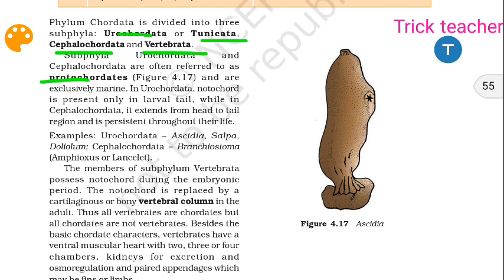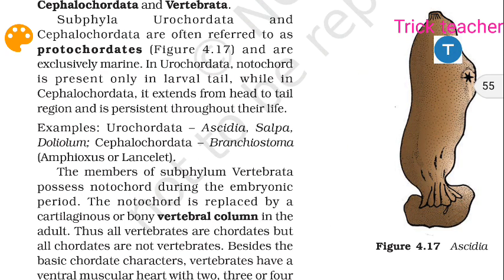Protochordata. In Vertebrata, the notochord is present only at some stage. Cephalochordata is present throughout. All parts are present. The notochord in Urochordata is restricted to the larval tail region.